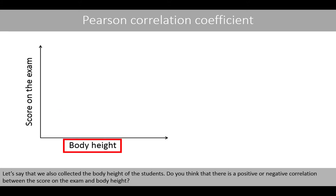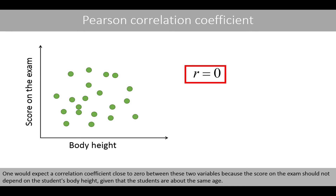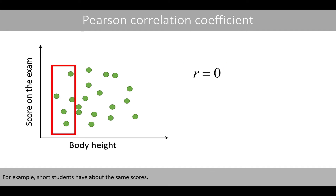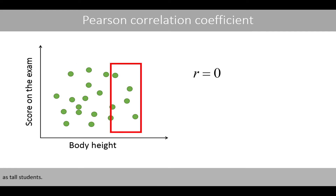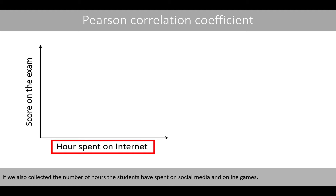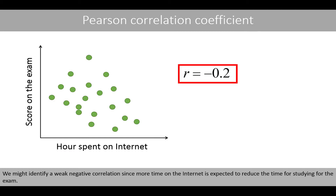Let's say we also collected the body height of the students. One would expect a correlation coefficient close to zero between exam score and body height, because the score on the exam should not depend on a student's body height, given that the students are about the same age — short students have about the same scores as tall students. If we also collected the number of hours students spent on social media and online games, we might identify a weak negative correlation, since more time on the internet is expected to reduce the time available for studying.